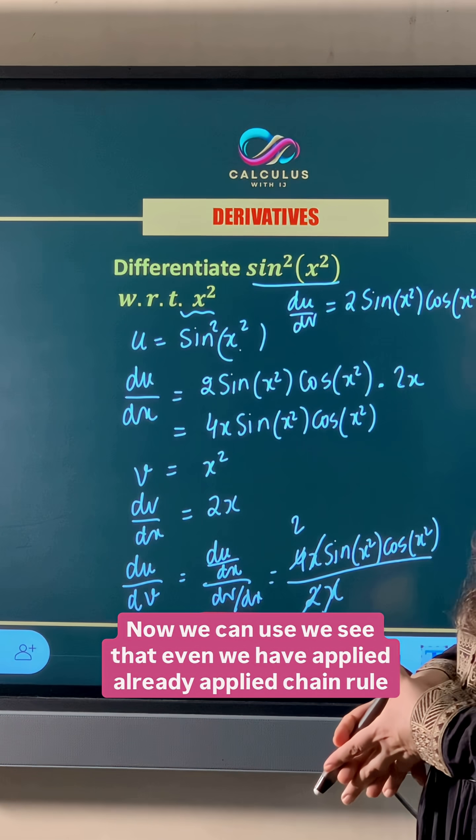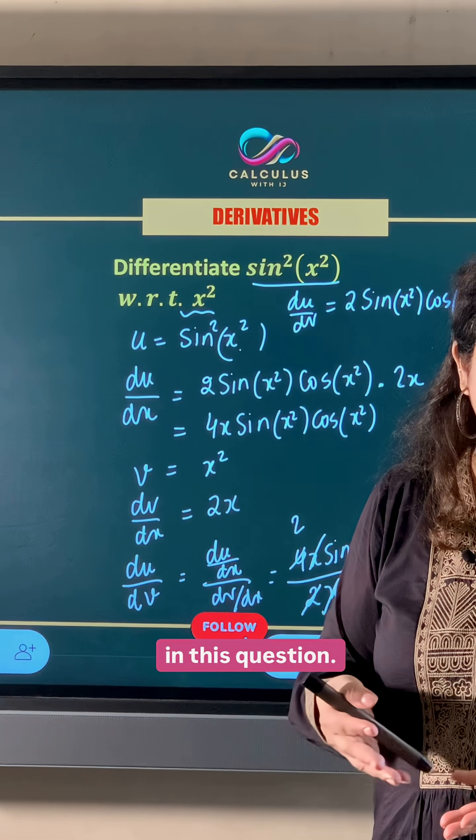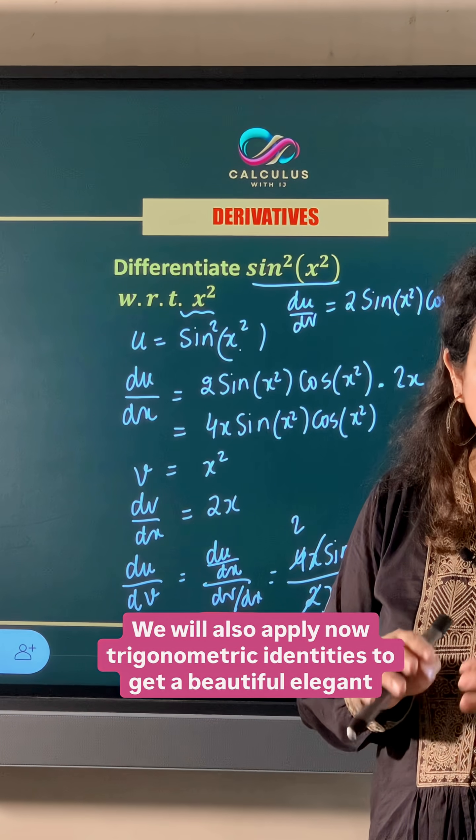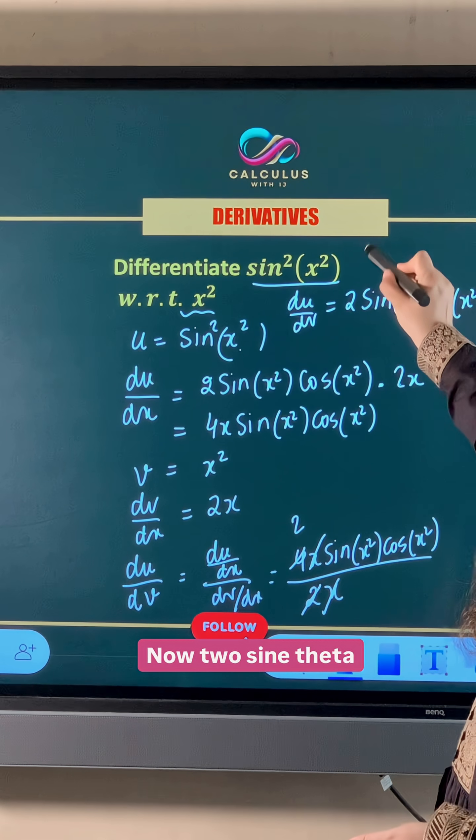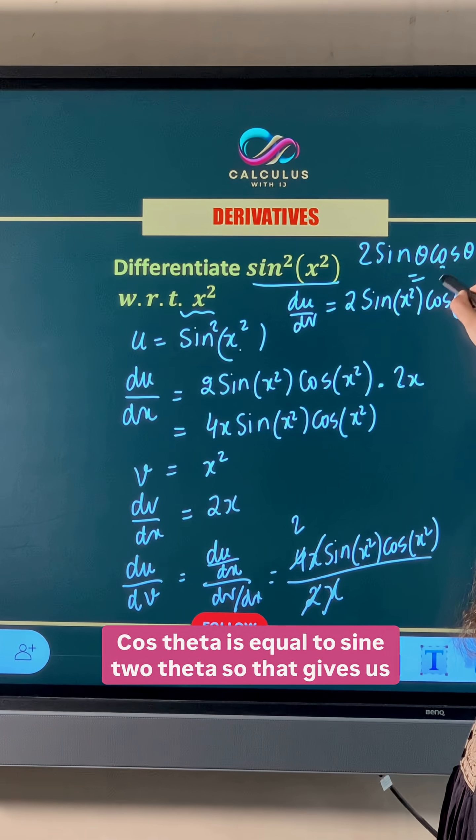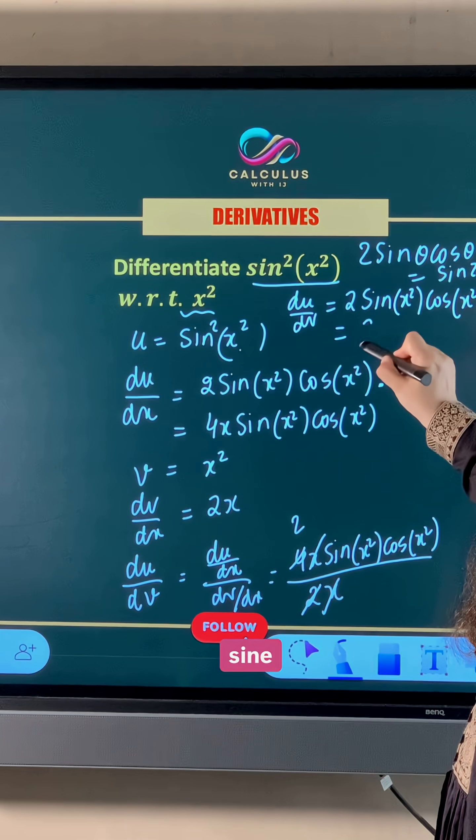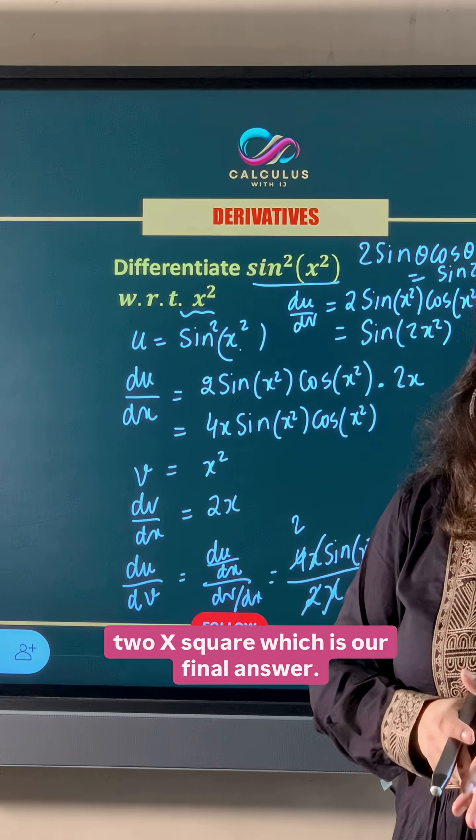Now we can see that even though we have already applied chain rule in this question, we will also apply trigonometric identities to get a beautiful elegant solution. Now 2sin(θ)cos(θ) = sin(2θ). So that gives us sin(2x²) which is our final answer.